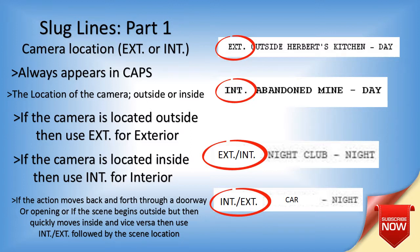Now a little bit more specific: if the action moves back and forth through a doorway or an opening, or if the scene begins outside but then quickly moves inside or vice versa, then use the combination of the abbreviations INT./EXT. followed by the scene location. For example: EXT. Herbert's kitchen — so you're outside some guy's kitchen. INT. abandoned mine — so you're inside some mine.